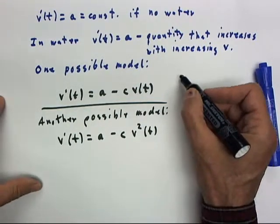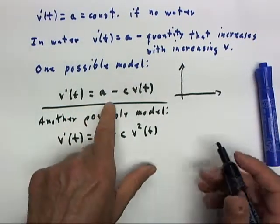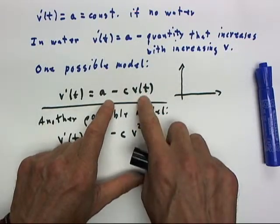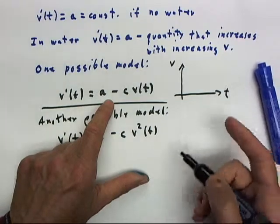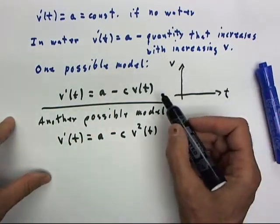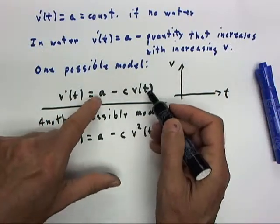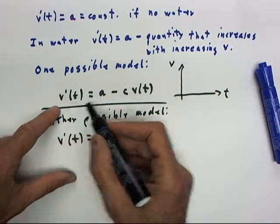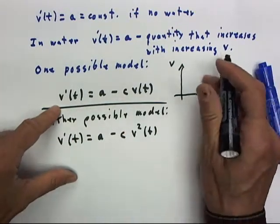Now again, either of these models, if we know the value of the constant c, what we have here is a rule that if we put the coordinates of a point v, if we put the v and t coordinates of a point in the v versus t plane into this expression, we're going to get some number that's going to give us the slope, the rate at which the velocity changes. So we're going to get some sort of a slope field here.